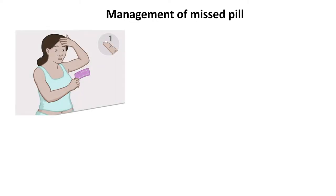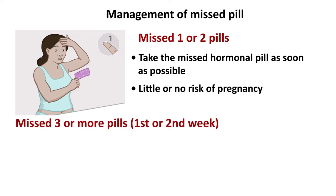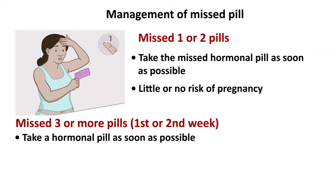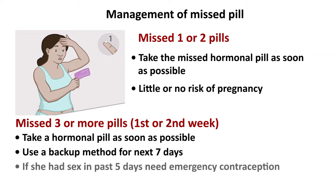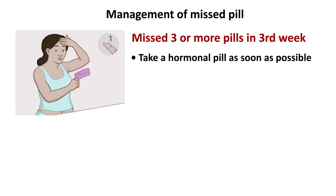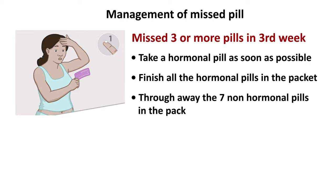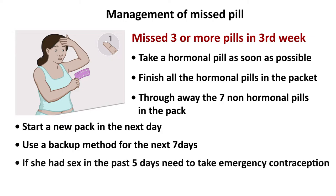Management of missed pills: if 1 or 2 pills are missed, take a hormonal pill as soon as possible — there is little or no risk of pregnancy. If 3 or more pills are missed in the first or second week, take a hormonal pill as soon as possible, finish all hormonal pills in the packet, throw away the 7 non-hormonal pills, start a new pack the next day, and use a backup method for the next 7 days. If she had unprotected sex in the past 5 days, she needs to take emergency contraception.